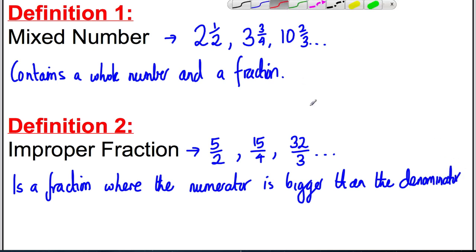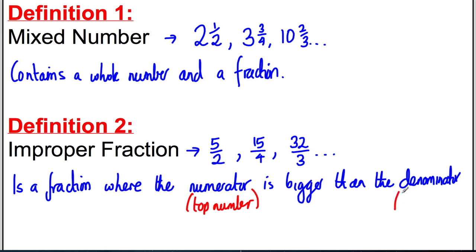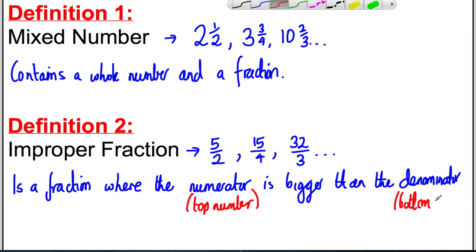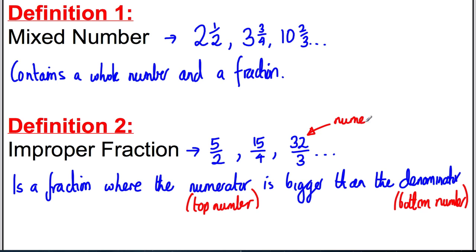The numerator is the top number of a fraction, and the denominator is the bottom number of the fraction. So in the case of 32 over 3, the numerator is 32, which is certainly bigger than the denominator. That's what makes it an improper fraction.